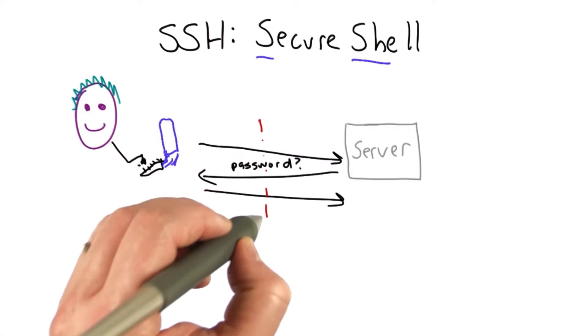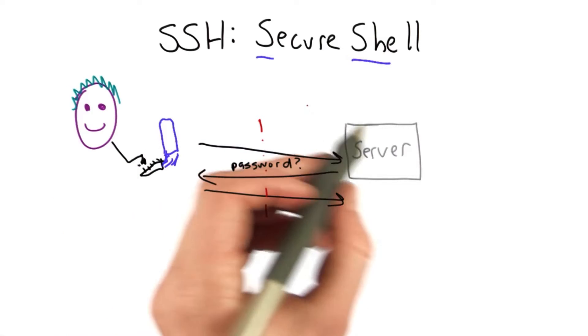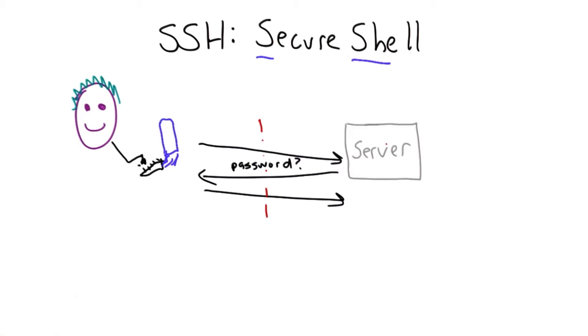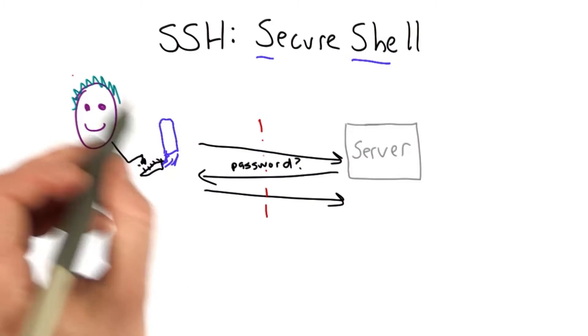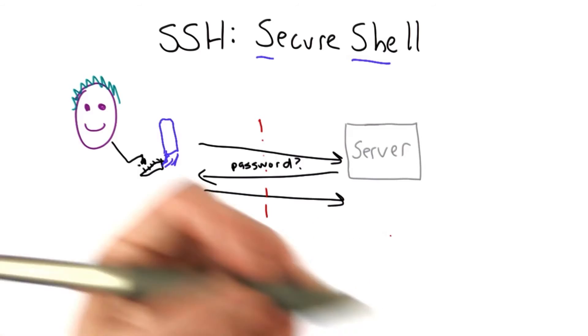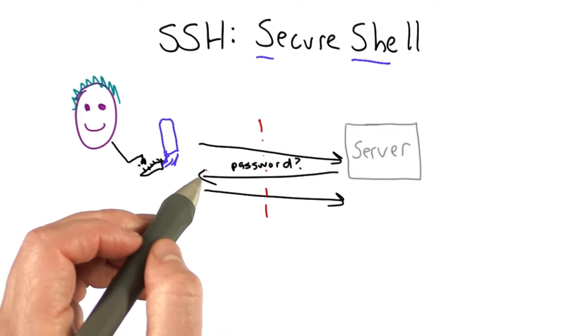What we want to know is that when a client's connecting to a server, they're connecting to the server they think they are, and that an attacker who can intercept and modify this traffic won't be able to trick the user into giving its password to a different server or thinking it's interacting with a different server.